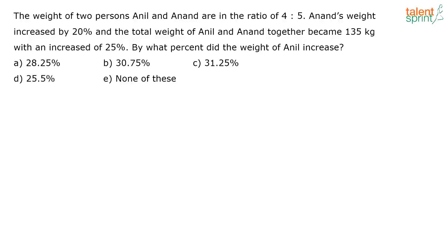The weight of two persons, Anil and Anand, are in the ratio 4:5. Anand's weight increased by 20% and the total weight of Anil and Anand together became 135 kg, with an increase of 25%. By what percentage did the weight of Anil increase?